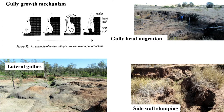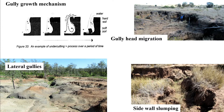Lateral gullies: where you've already got a gully and then you get side water coming in, and you've got the waterfall or whatever — you get these little side gullies developing. And sidewall slumping where it runs along underneath or just at the level of the floor but up against the wall, and especially if you've got dispersable subsoil, that'll wash out and then the topsoil will slump in.